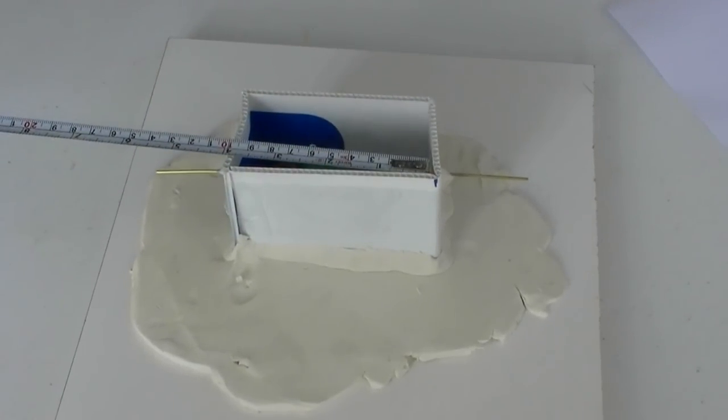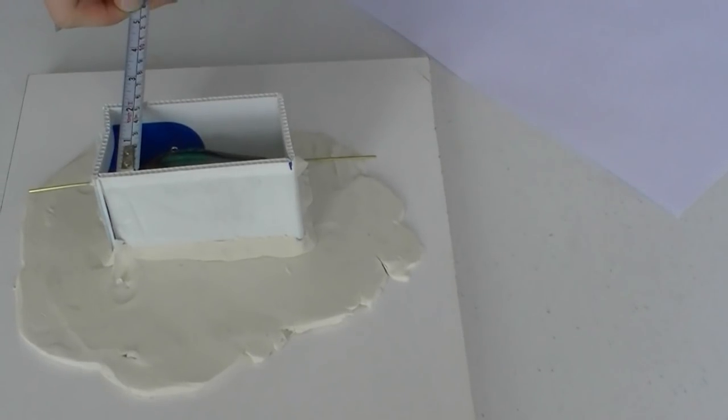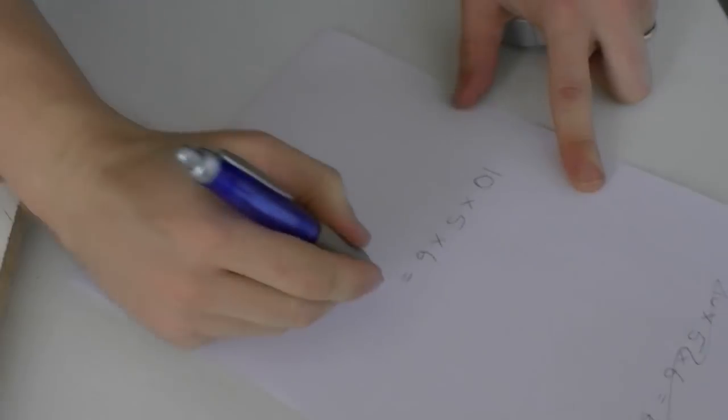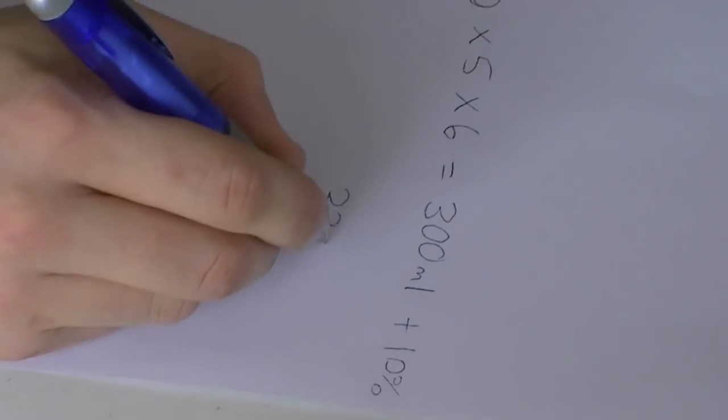We will now measure in centimeters the volume of the mould box by taking the length, breadth and height. Multiply these three measurements together and this will give you the volume in milliliters. Add 10% and this will give you the approximate weight of rubber we need to mix and pour.